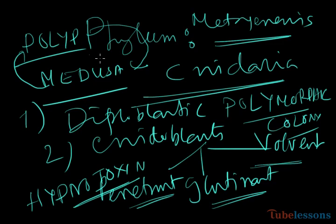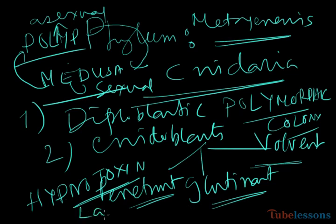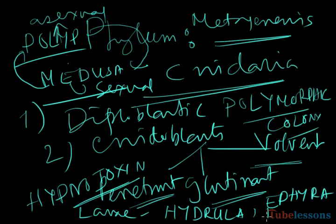The polyp is actually associated with asexual reproduction, while the medusa is for sexual reproduction. In several cases, the cnidarian members are having a number of larvae like hydra, ephyra, and planula.